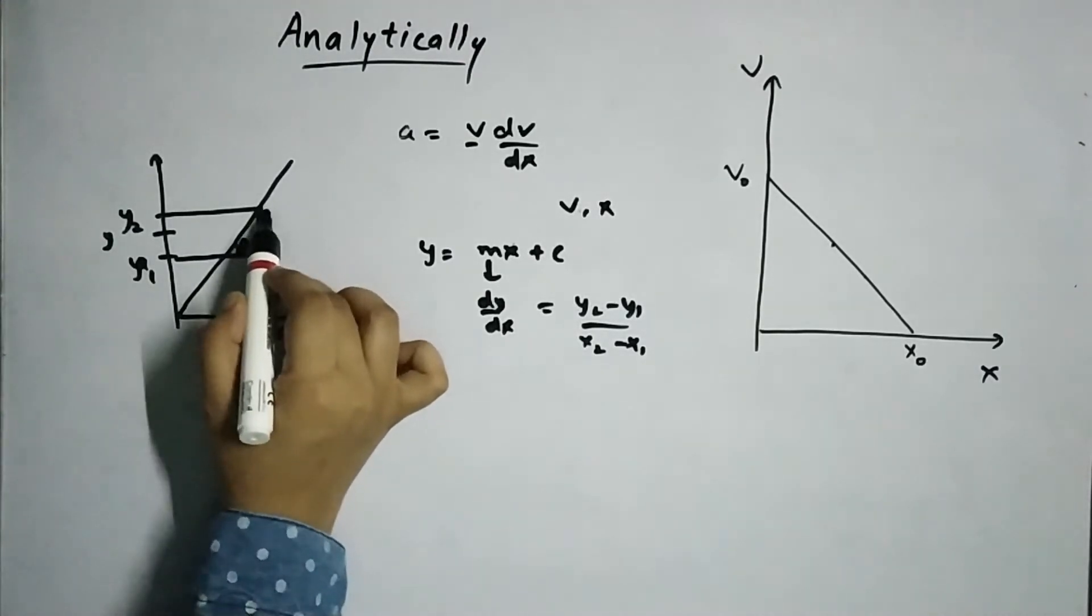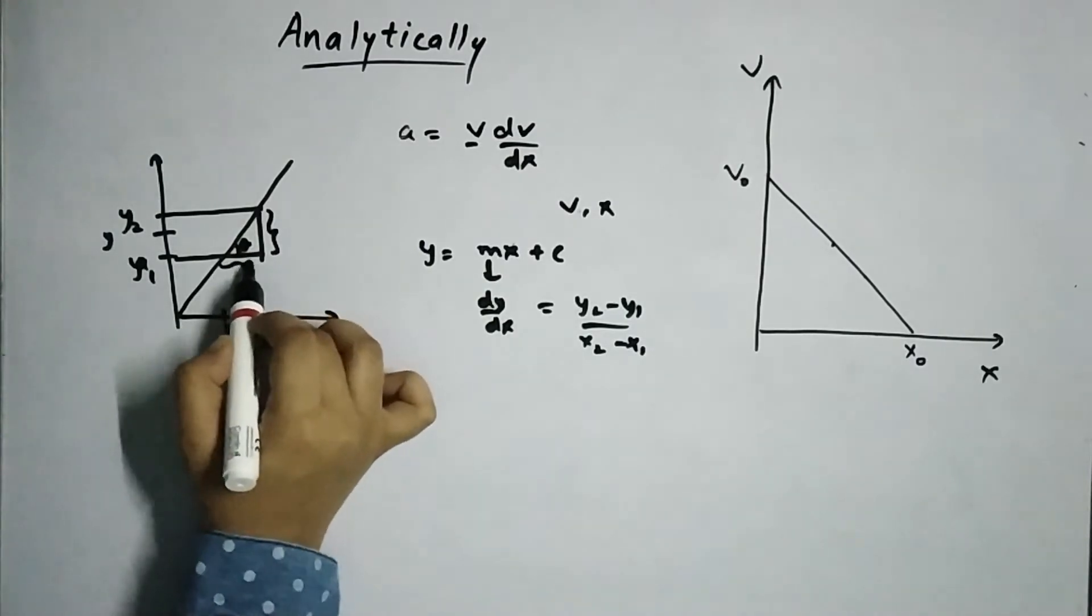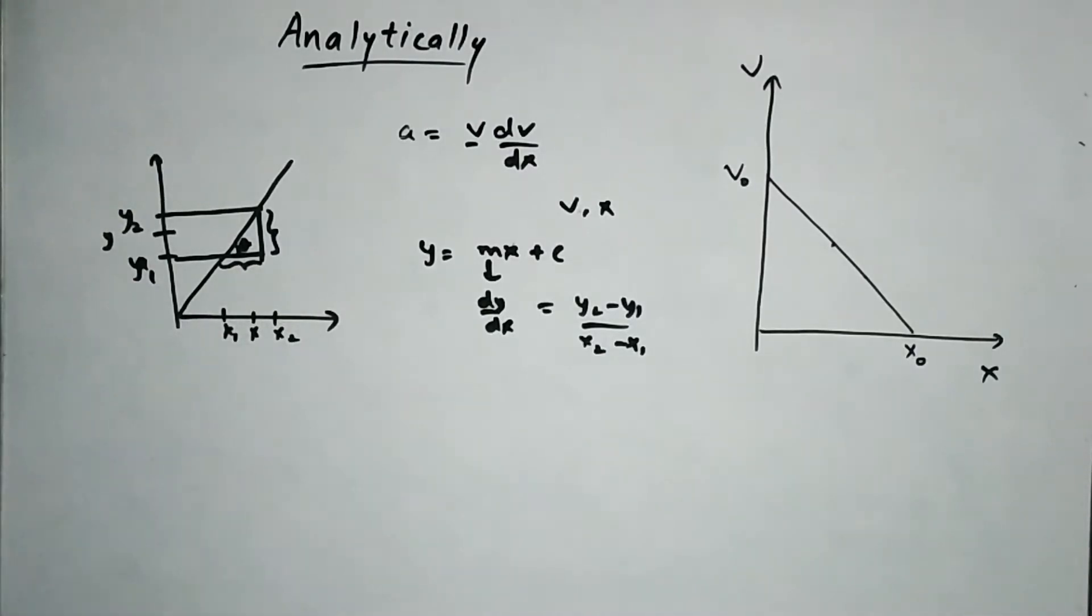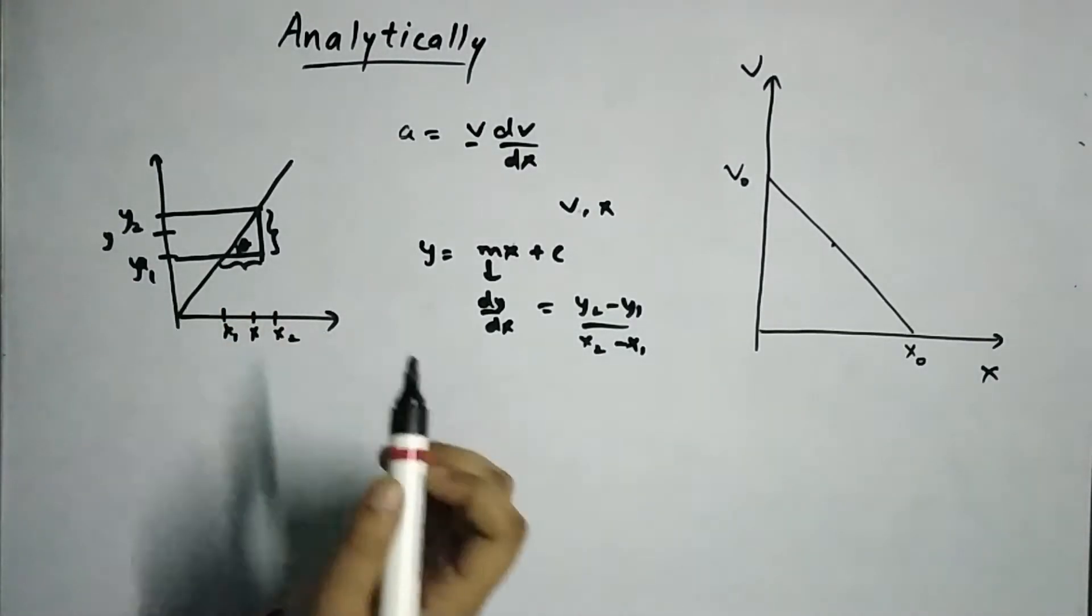So the slope will be, this is the slope, tan theta. How do you find tan theta? This by this, right? And this will be given by y2 minus y1 and this will be given by x2 minus x1. So this is the slope.